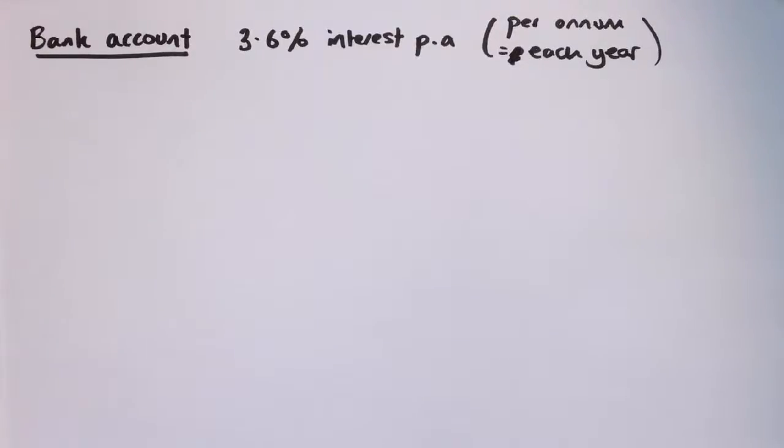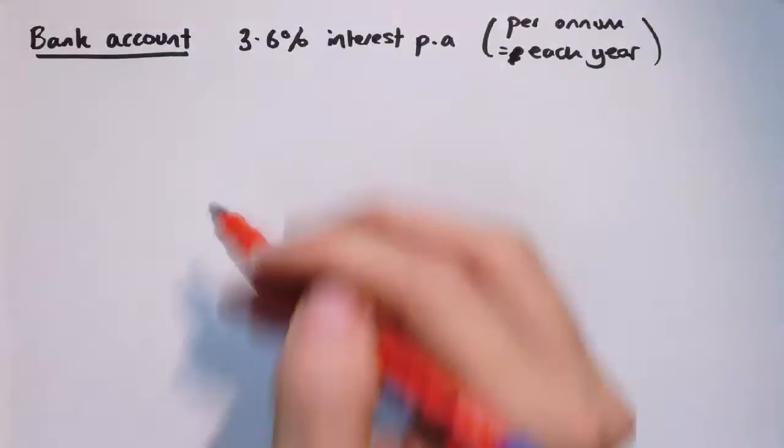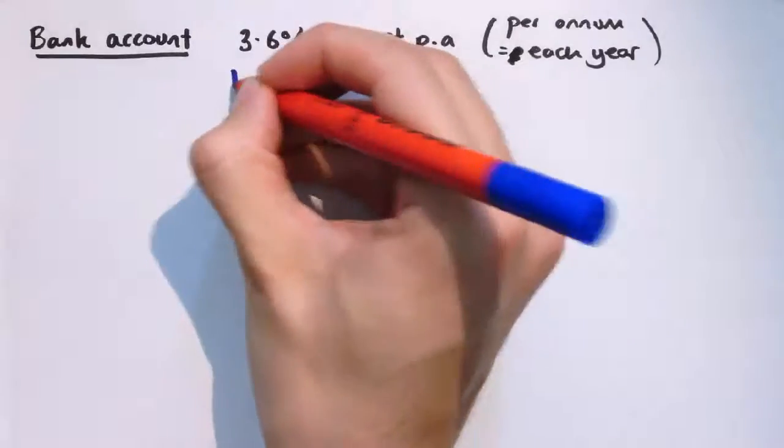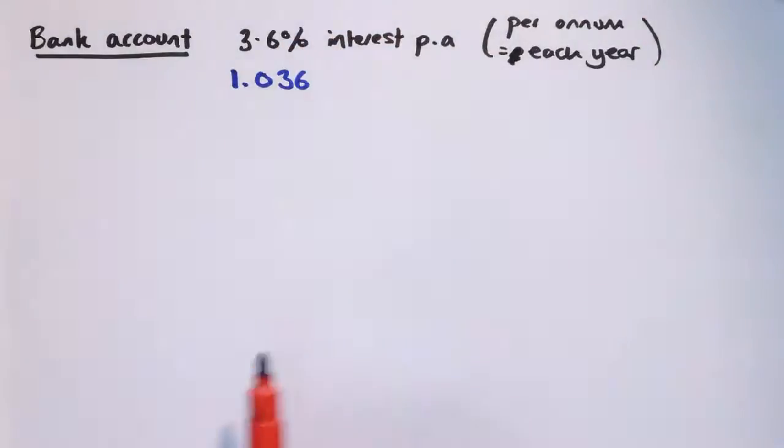Now this is a particularly powerful idea when I've got the same scale factor applied over and over again. For example, a typical use of this is interest rates in bank accounts. So let's say I've got a bank account and it pays me 3.6% interest per annum, per annum just means each year. Well that would be a scale factor of 1.036, an increase of 3.6% each year. At the end of the year I've got 3.6% more than I started with.